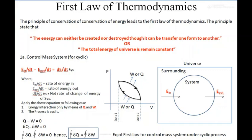As per the First Law, if we talk about a system, some amount of energy E_in is entering the system and some amount of energy E_out is leaving the system and entering the surroundings. When we sum up for the universe, E_in plus E_out gives the energy of the universe, which remains the same. From the viewpoint of the universe, nothing gets destroyed or created — it is all here as it is.